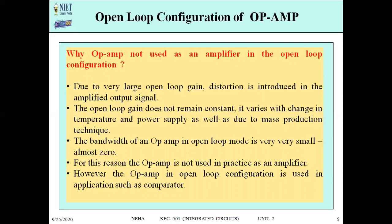Our purpose is to have good gain but with no noise, no distortion, and immunity from temperature and external effects — that is why we study closed loop configuration. The best part of closed loop configuration is the use of a feedback loop. The feedback is used to produce the necessary corrections in the output and to provide stability in the circuit, allowing us to design a stable circuit.